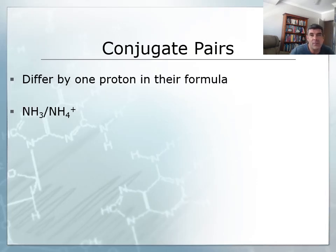One of the things that's very important as a consequence of the Bronsted-Lowry definition of acids and bases is that we can identify conjugate pairs. Conjugate pairs are acid-base pairs that just differ by one proton in their formula. There's a huge number of examples of these. The ammonia NH3 form and the ammonium ion NH4+ form differ in the presence or absence of a proton, an H+.